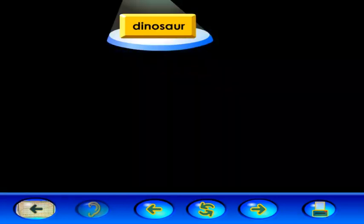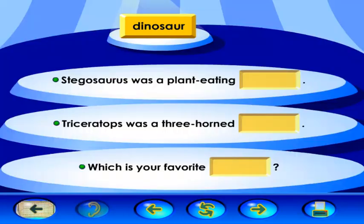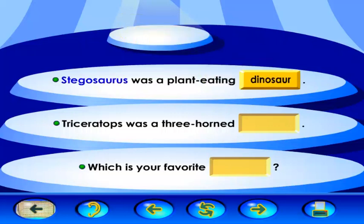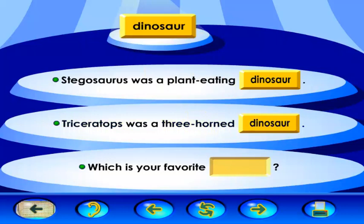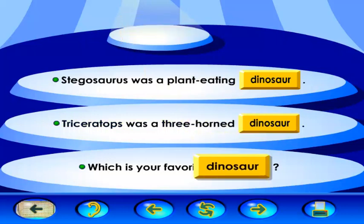This is the amazing word dinosaur. Look at the word and say it out loud with me. Dinosaur. Use the word dinosaur to complete these sentences. Stegosaurus was a plant-eating dinosaur. Triceratops was a three-horned dinosaur. Which is your favorite dinosaur?